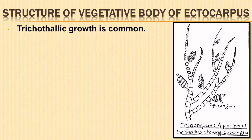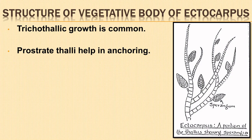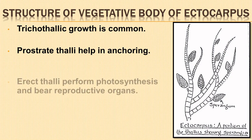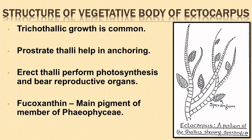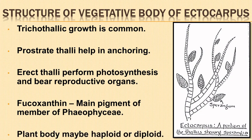Trichothallic growth is common in Ectocarpus, in which some meristematic cells add to the length of terminal hair and other meristematic cells form the branches. Prostrate thalli help in anchorage by means of the rhizoids while erect thalli perform photosynthesis and bear reproductive organs. The main pigment of the members of Phaeophyceae is fucoxanthin, which imparts the characteristic brown coloration. The plant body is genetically differentiated into haploid and diploid plant body.